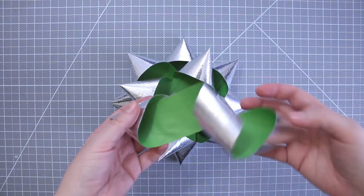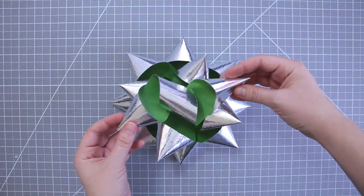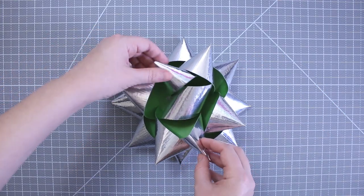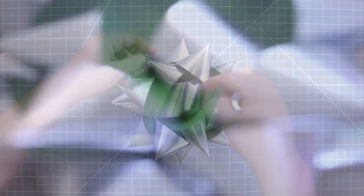When you get to the last piece, stick it in the center, keeping a big loop in the center. And now you have a big gift bow.